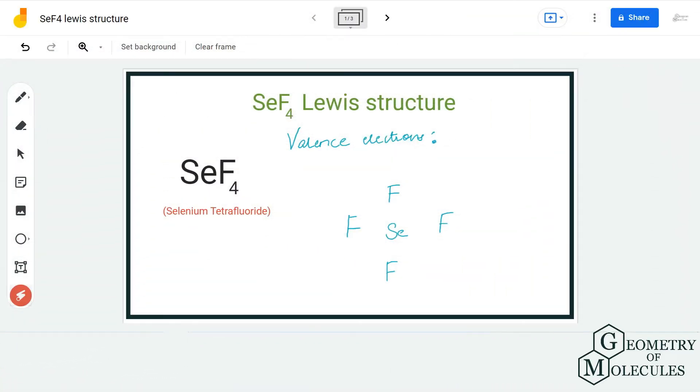Hi guys, welcome back to our channel. In today's video we are going to determine the Lewis structure for selenium tetrafluoride. It is the chemical name for this formula SeF4. So to find out its Lewis structure we are first going to find out the total number of valence electrons.